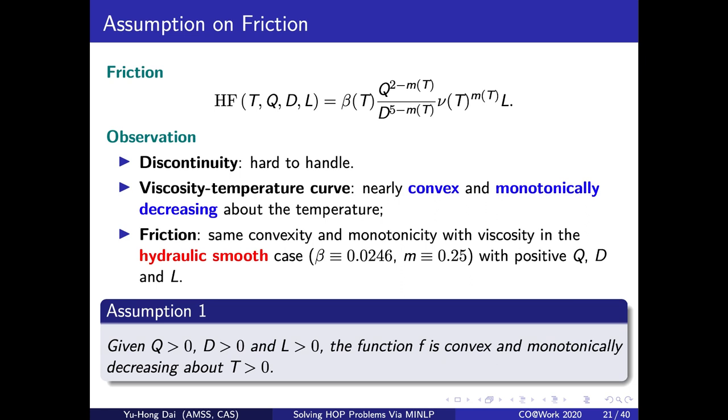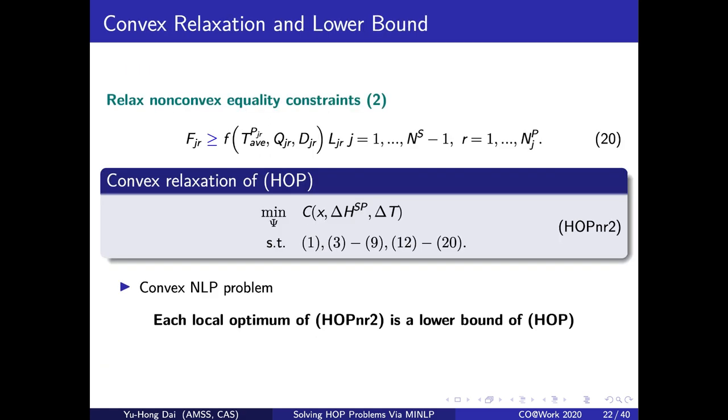So the next question is how to deal with the non-convexity to get the lower bound of HOP. Recall the friction formula I introduced in the first section. It is hard to compute, but if we consider the fact in the real production situations, the viscosity-temperature curve is usually convex and monotonically decreasing above the temperature, and the friction will have the same convexity and monotonicity if the oil is hydraulic smooth. Then the friction calculation can be reasonably simplified. So we give the assumption 1 on the nonlinear function f in our HOP model. With this assumption, we relax the non-convex constraints 2 and get these inequality constraints. Because we assume f is convex, constraints 20 are convex constraints. Then we get the convex relaxation of HOP. We denote it as HOPnr2.